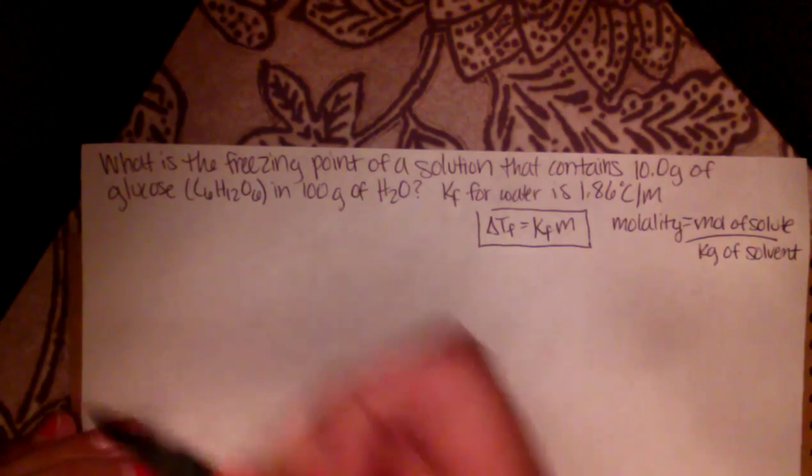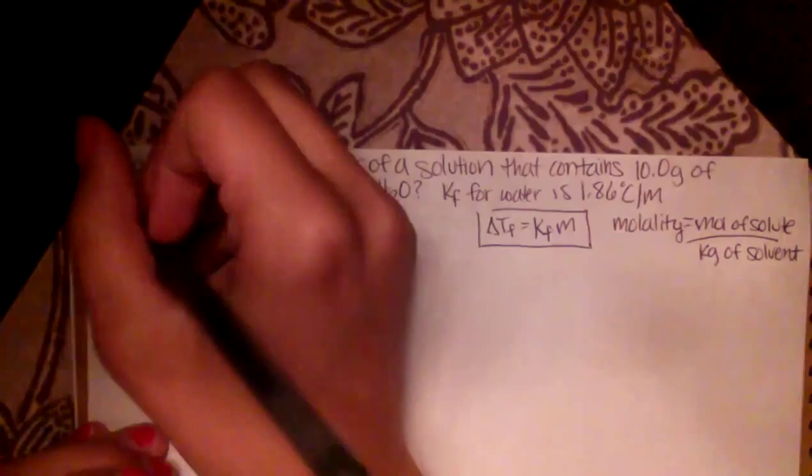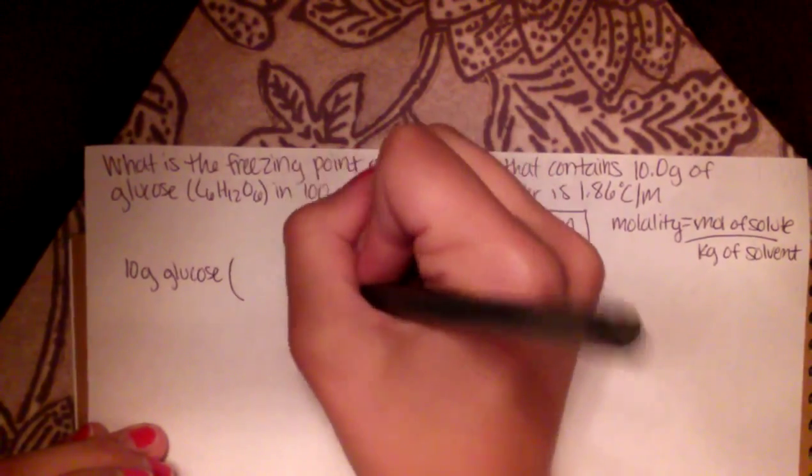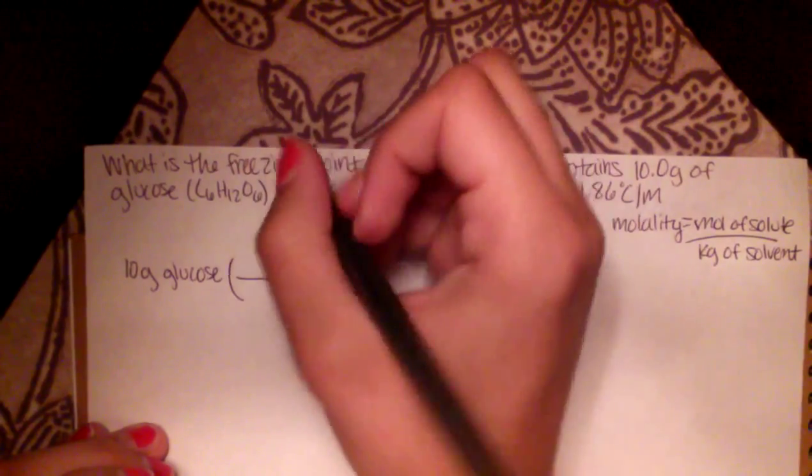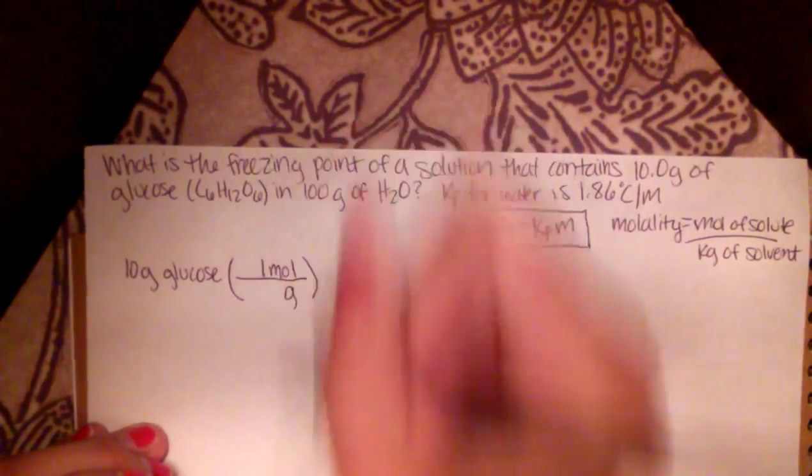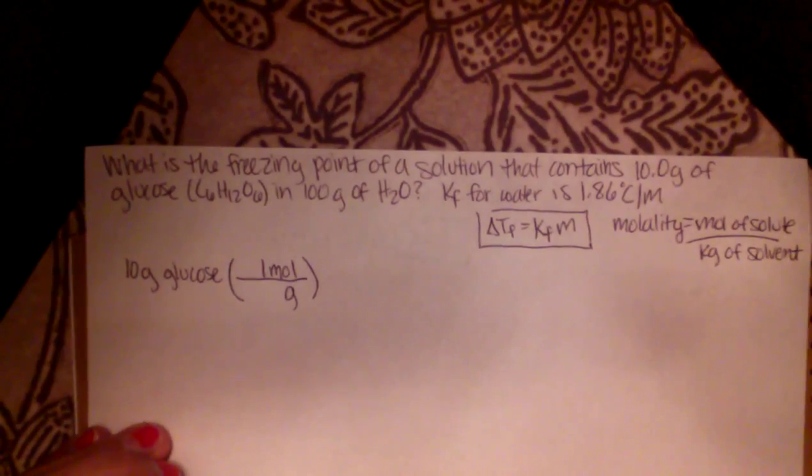So let's first calculate the grams of glucose. So we have, it states in the problem, we have 10 grams of glucose. And we're going to multiply that by its molar mass, so we can get a mole value.